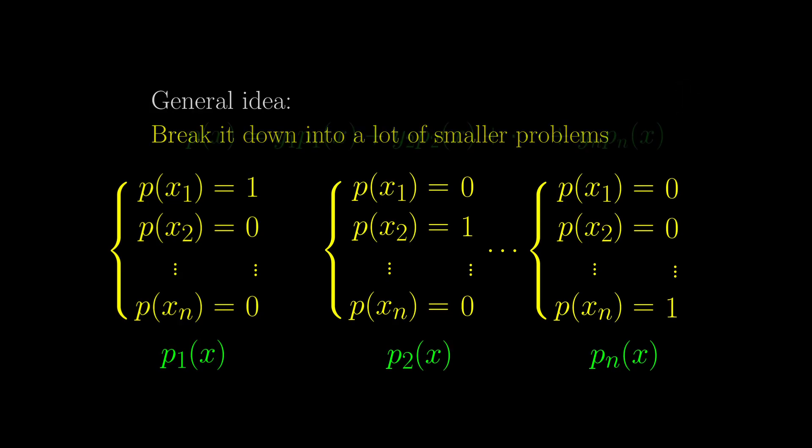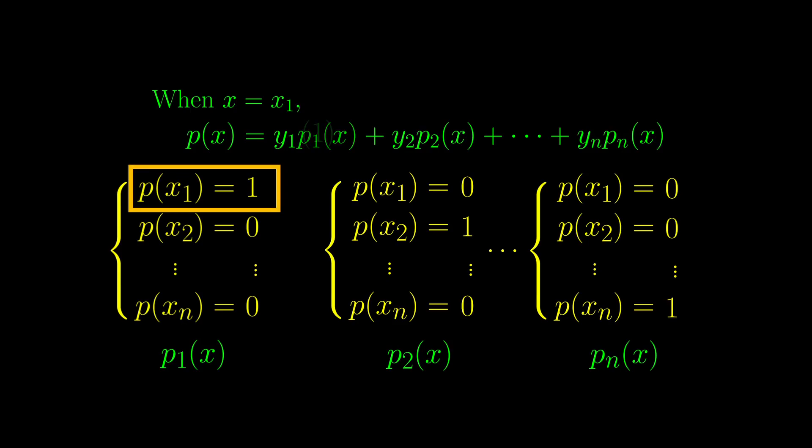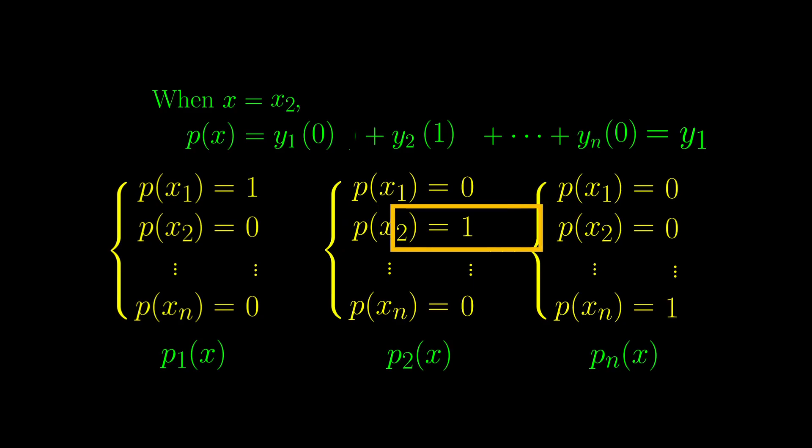Now consider this polynomial. When x equals x1, this polynomial returns y1 times 1 plus y2 times 0 all the way to yn times 0. So this polynomial returns y1 when it is fed with x1 as input. Similarly, when x equals x2, this polynomial would return y2 and so on. And so it satisfies the original set of equations.